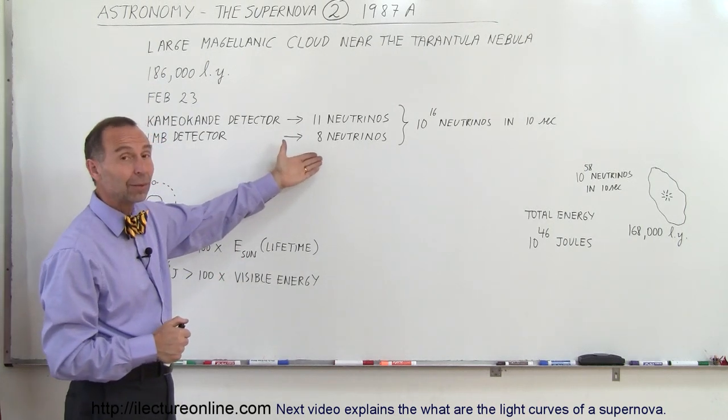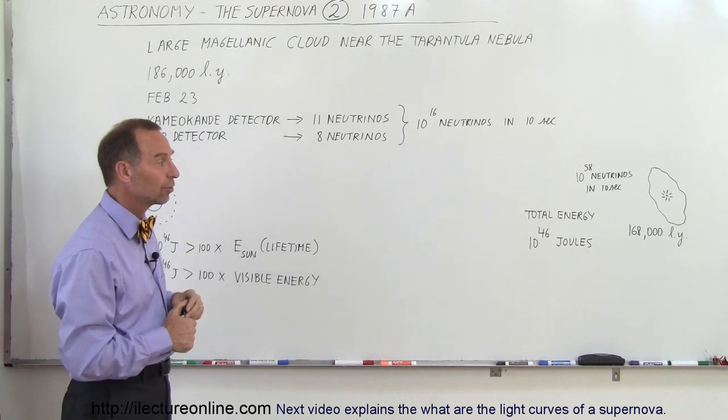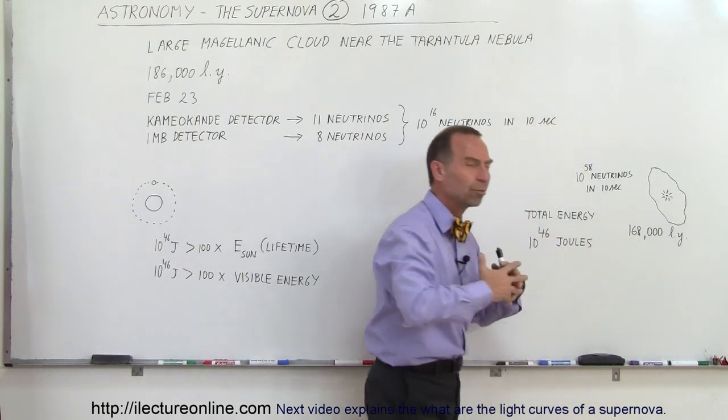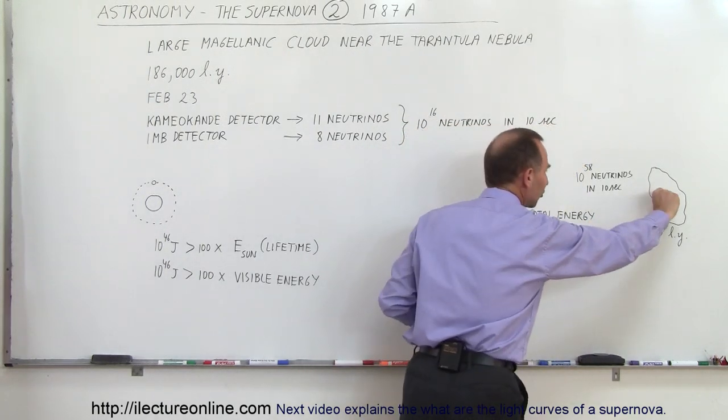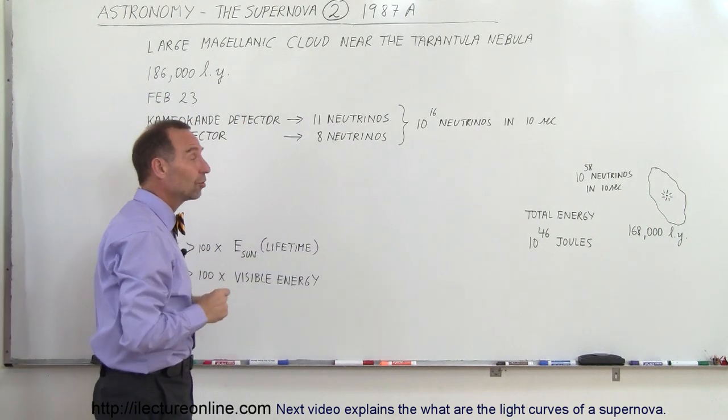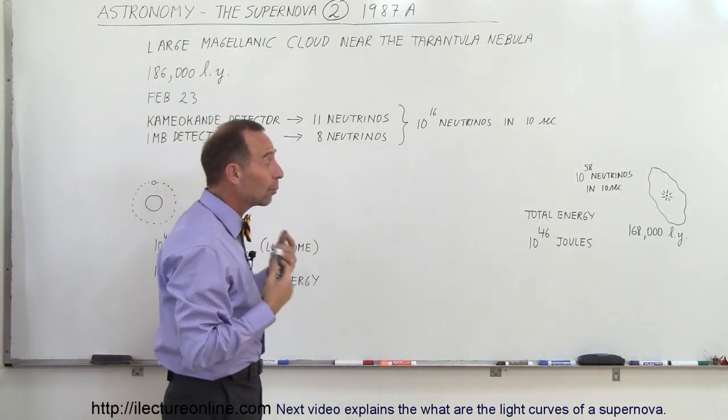A very small percentage of them will actually interact with any matter whatsoever. So it's amazing that we're able to detect neutrinos in those detectors. Then calculating back, realizing how this burst of neutrinos would have spread all over the Universe, and how a very small percentage of that would have then actually reached the Earth and reached those detectors, we went back and calculated what that would have meant.